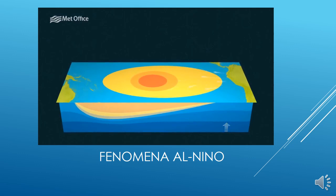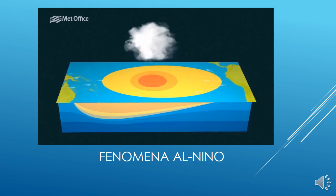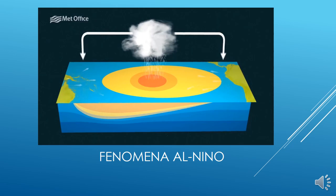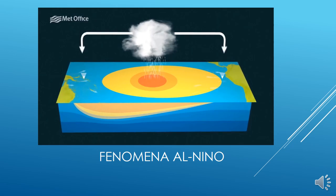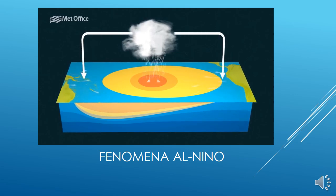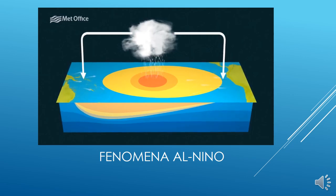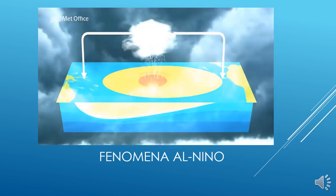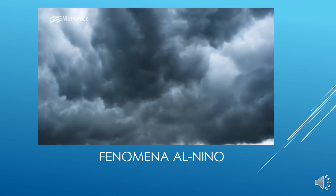This allows the usually colder parts of the ocean to warm, cancelling out the normal temperature difference. Because the area of warmest water moves, so does the associated wet and unsettled weather. This changes rainfall patterns over the equatorial Pacific, as well as the large-scale wind patterns. It's this change in winds which has a knock-on effect, changing temperature and rainfall in locations around the world. The main impacts are around the tropics.